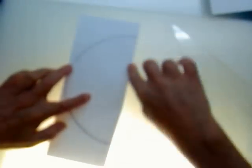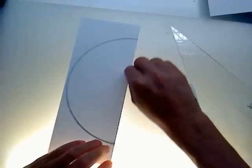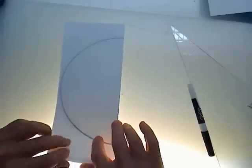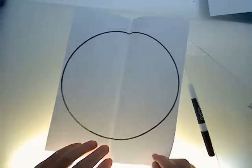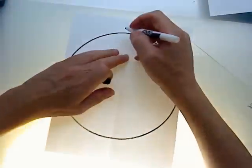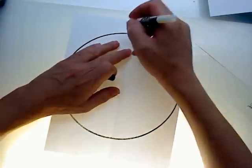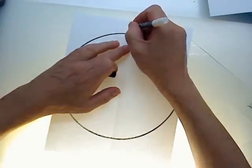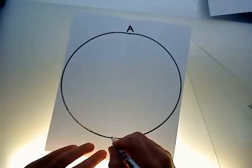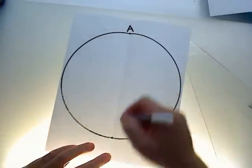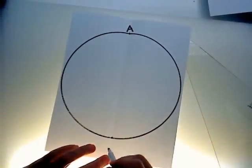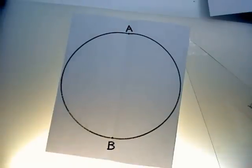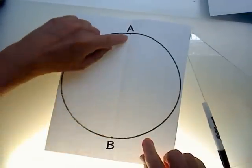As I did before, once I have that I can put a dot there and label it A. A dot at the bottom where the diameter intersects the opposite end, we'll call that B.